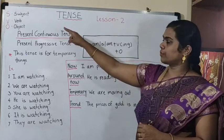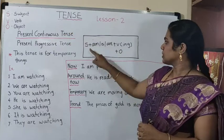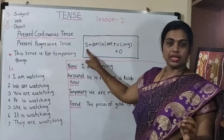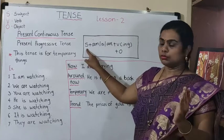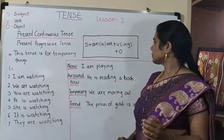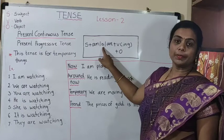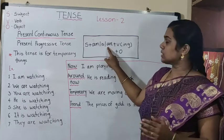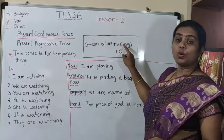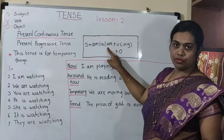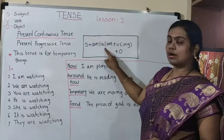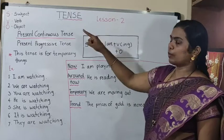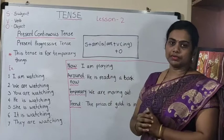I have written shortcuts: S for subject, V for verb, and O for object. Subject means any noun — any name, or a pronoun such as I, we, you, he, she, it, they. The second part is the 'to be' forms: am, is, are. These are called helping verbs — they help the main verb. So am, is, are are helping verbs, and O is for object.